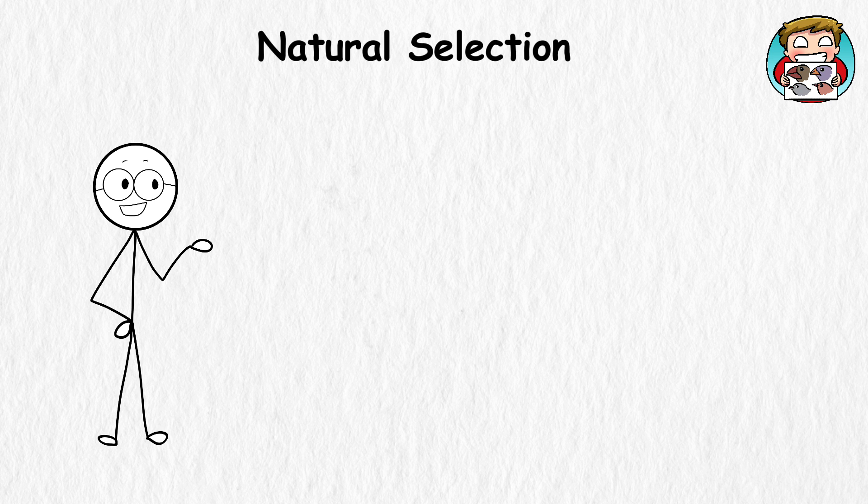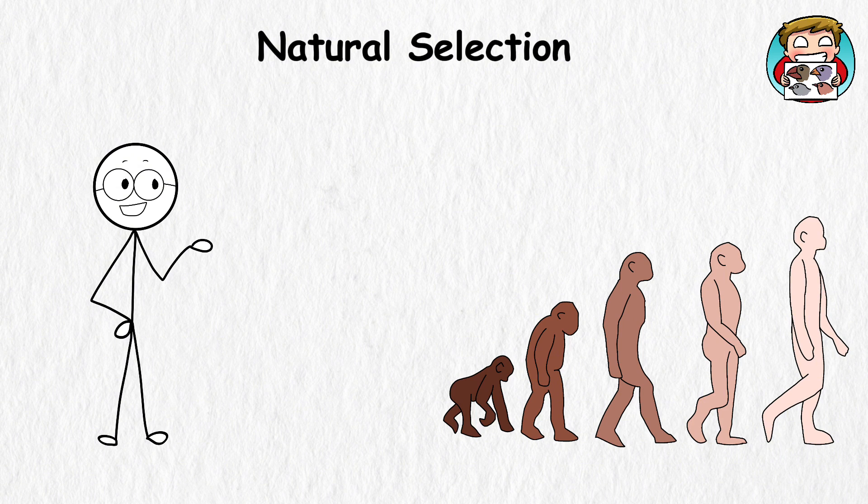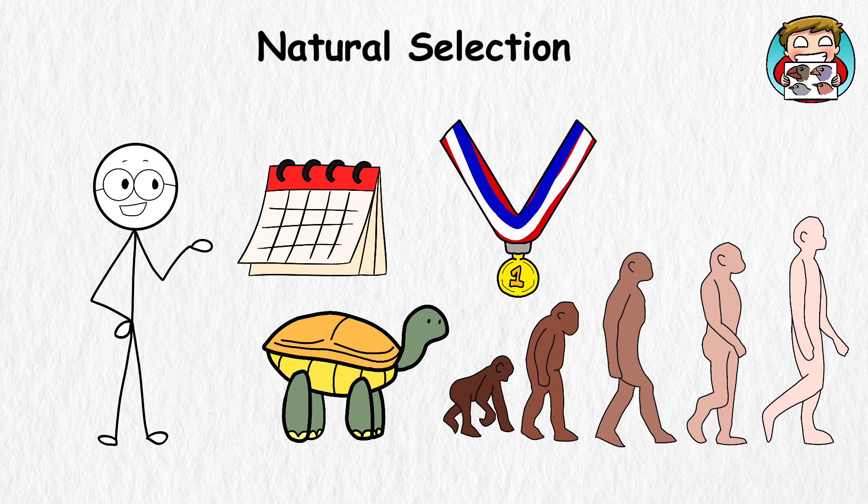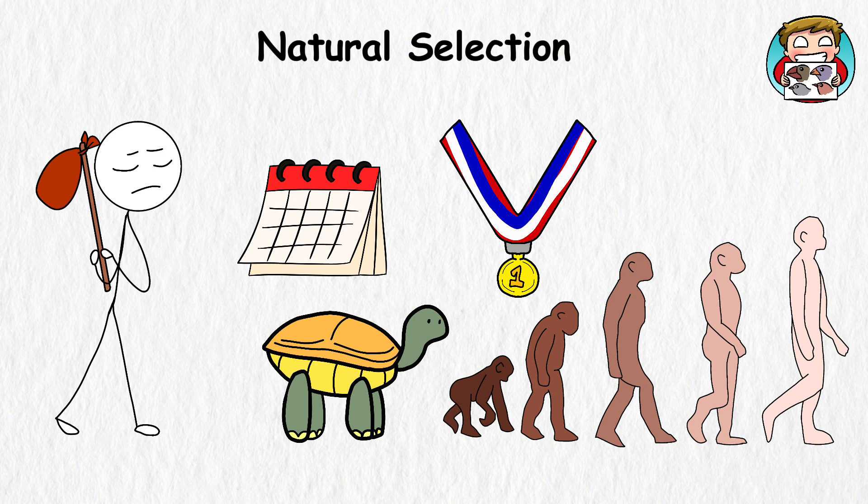Natural selection is all about these little differences giving some individuals a better shot at surviving and reproducing. So this is important because natural selection dictates how you evolve. It tends to be slow, steady, and gradual, taking place thousands or even millions of years. Those who perform best in their environment in the long run get to pass on their genes, while the others, well, they get voted off the island.